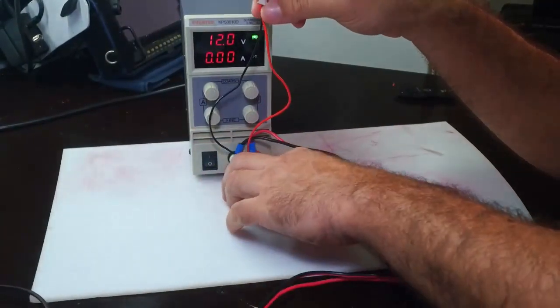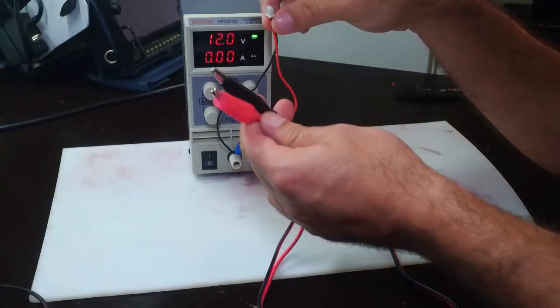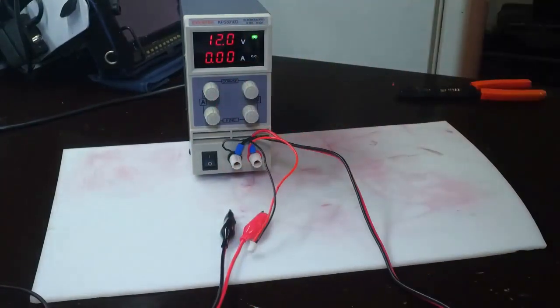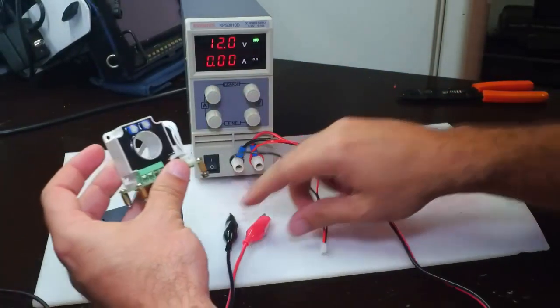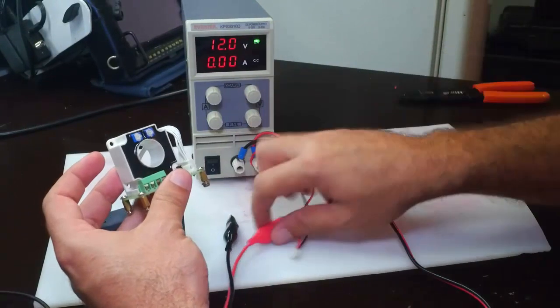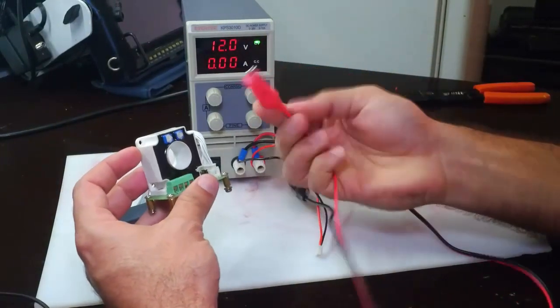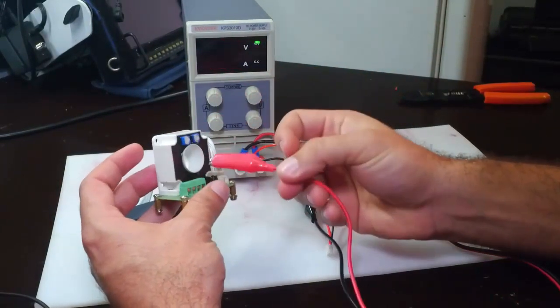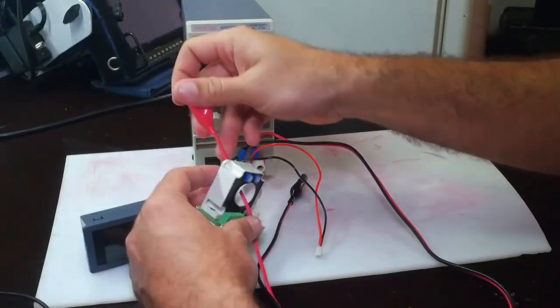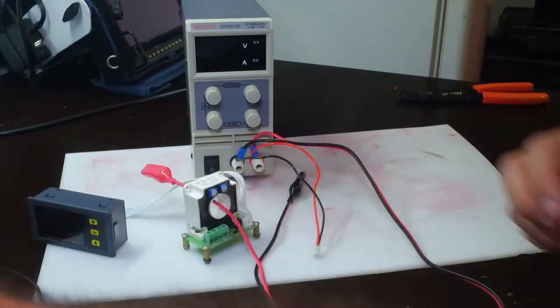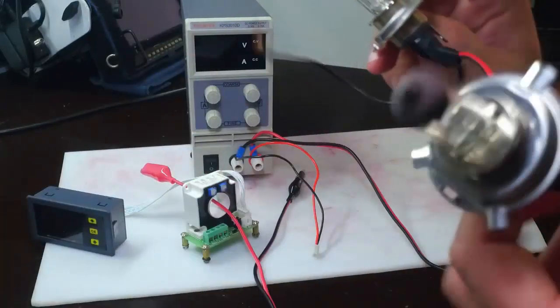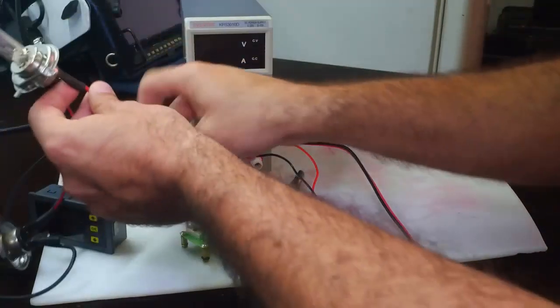So with the tailed unit, this is the unit, and we pass the positive lead through the Hall FX sensor unit in this way. After that, we're going to connect the two light bulbs in series this way.